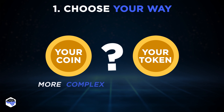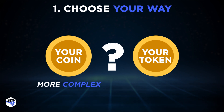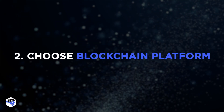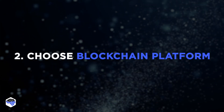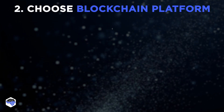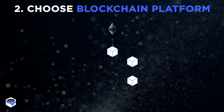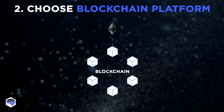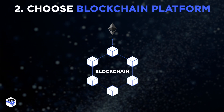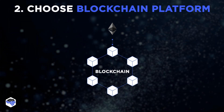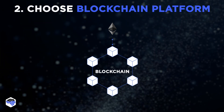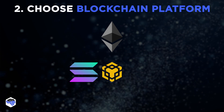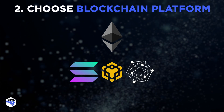So you want to create a cryptocurrency, but where do you start? First, you have to decide which development route you're going to take. Creating a coin is a more complex option and you will most likely need a team of experienced professionals. Having chosen token development, you must choose the blockchain platform — most likely Ethereum, due to its smart contract capabilities and simplification of dApp development.